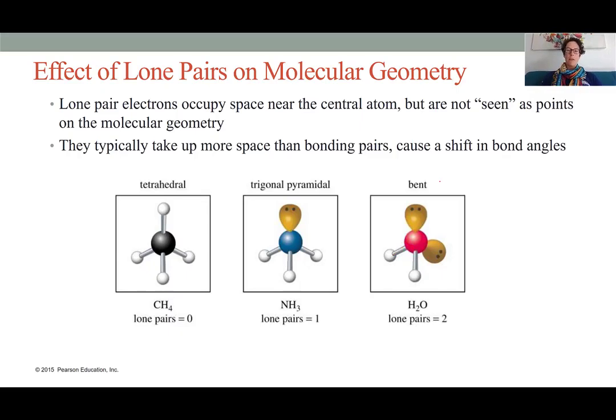As I mentioned, by having lone pairs on a central atom, there is an impact on the angles of the bonds around that atom. So in the case of methane, all of the electron groups are equal in that they are all bonds to hydrogen. So we have a bond angle of 109.5 no matter which angle we choose. In the case of ammonia, that electron cloud at the top of the molecule is pushing down on the lower bonds, such that we get an angle of about 107 degrees between those hydrogen to nitrogen to hydrogen atoms. With water having two lone pairs, that bond becomes even tighter and has an angle of approximately 104.5.